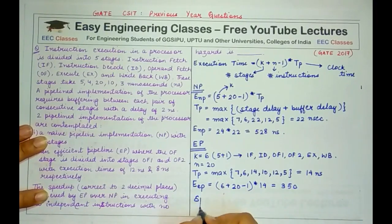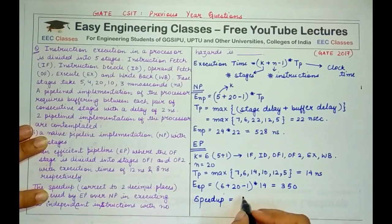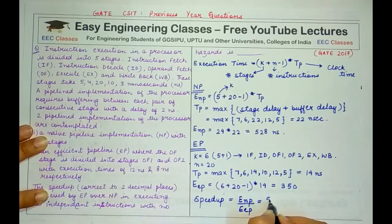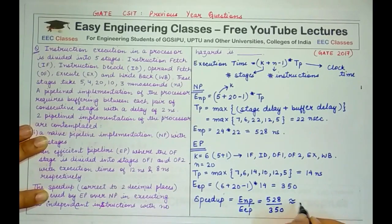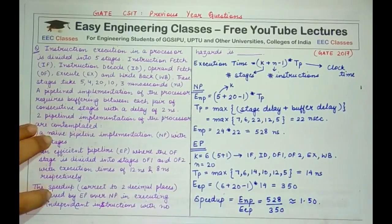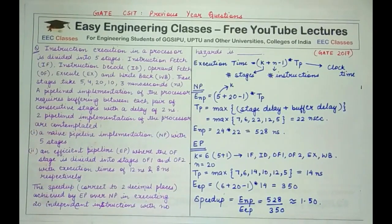Speedup is the original execution time divided by the new execution time, which is ENP / EEP = 528 / 350 ≈ 1.50. Since the answer is required to two decimal places, 1.50 is the final answer.